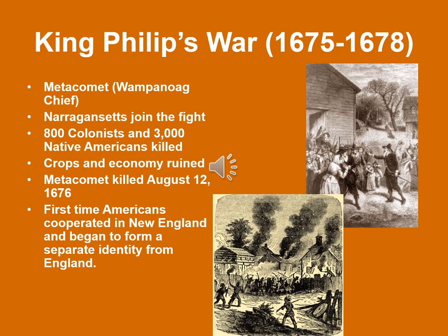The Narragansetts also joined in the war with the Wampanoags. Over the course of what was known as King Philip's War — most of which was fought in 1675 and 1676 — 800 colonists and 3,000 Native Americans were killed in the fighting, and the crops and economy were ruined. Metacomet himself was killed in battle on August 12, 1676. After they killed him, the Puritans had him drawn and quartered — his legs and arms sent to the four corners of the colony to warn against future revolts, and his head placed on a pike displayed on the wall of the fort in Plymouth, Massachusetts for the next 20 years. The Puritan minister Increase Mather